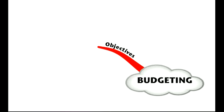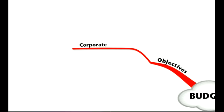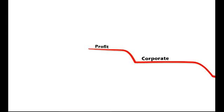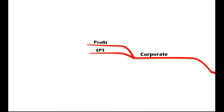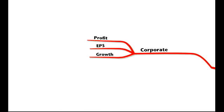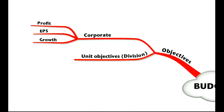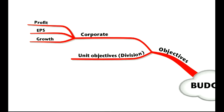Let's look first of all at objectives. Remember that our budgets should support our corporate objectives. So our corporate objectives may be profit maximisation, maximising earnings per share, or maximising the growth of the company. Whatever those corporate objectives are, your budget must seek to achieve them.